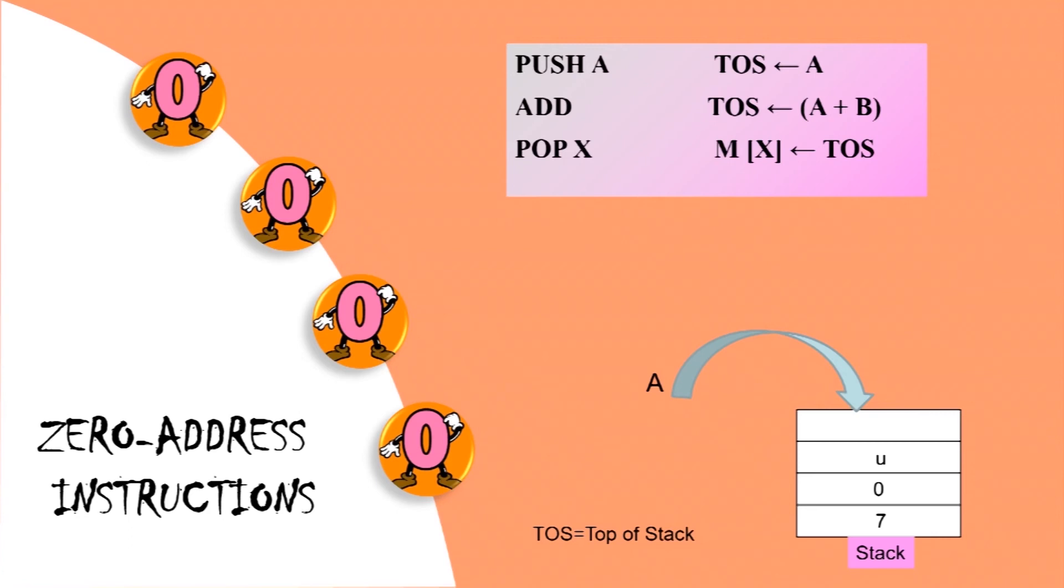Push A, TOS arrow A. Add, TOS arrow A plus B. Pop X, MX arrow TOS. Where TOS stands for top of the stack. To evaluate arithmetic expressions in a stack computer it is necessary to convert the expression into reverse polish notation. The term zero address is given because of the absence of an address field in the computational instructions.